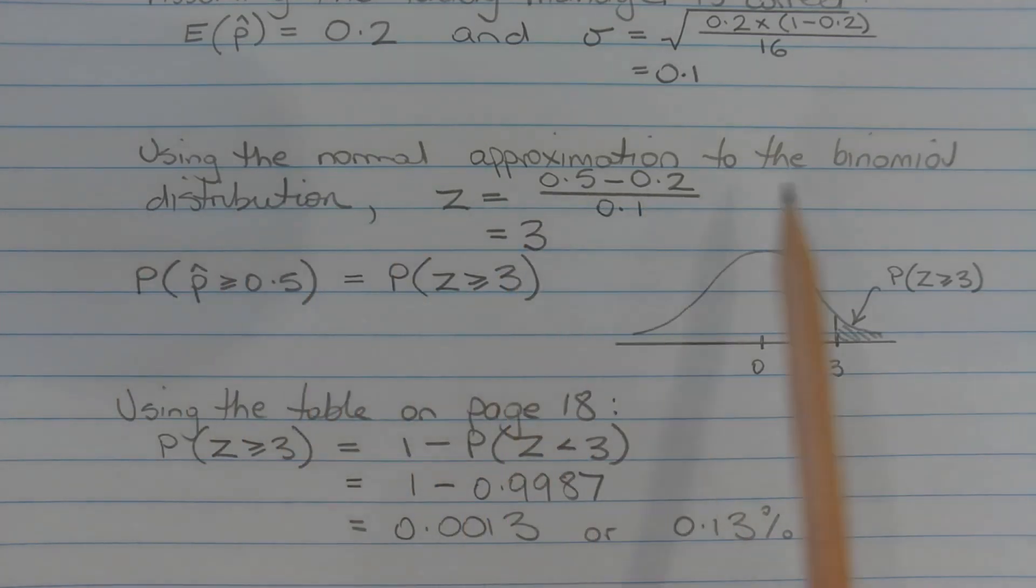Using the normal approximation to the binomial distribution, the z score that corresponds to 0.5 is equal to 0.5 minus 0.2 over 0.1, which equals 3.